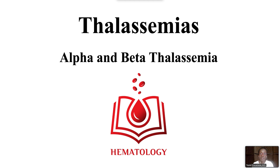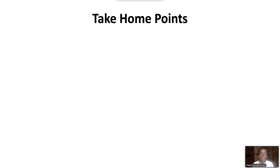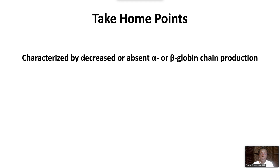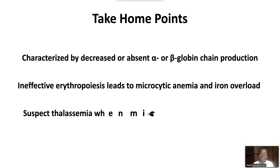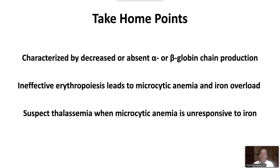Welcome to Thalassemias: alpha and beta thalassemia. We have the following take-home points. Thalassemias are characterized by decreased or absent alpha or beta globin chain production. Ineffective erythropoiesis in thalassemia leads to microcytic chronic hemolytic anemia and iron overload. Suspect thalassemia when microcytic anemia is unresponsive to iron supplementation.